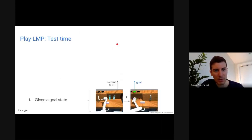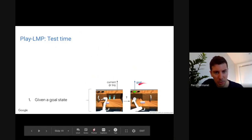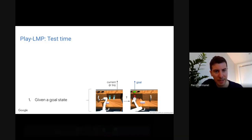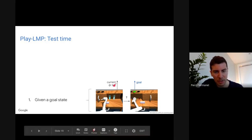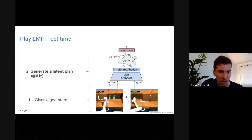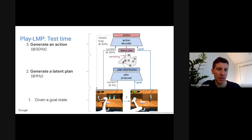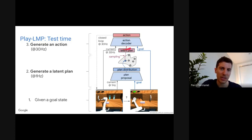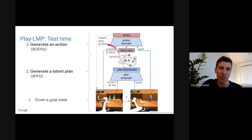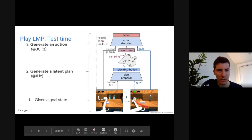At test time, given a goal image — for example, pressing a button — and the current image running at one hertz, we feed these to the plan proposal to get a latent plan distribution. We sample a latent plan at one hertz and feed it to the action decoder, which runs at 30 hertz in closed loop. As long as you have a goal image, this runs and performs actions in sequence.